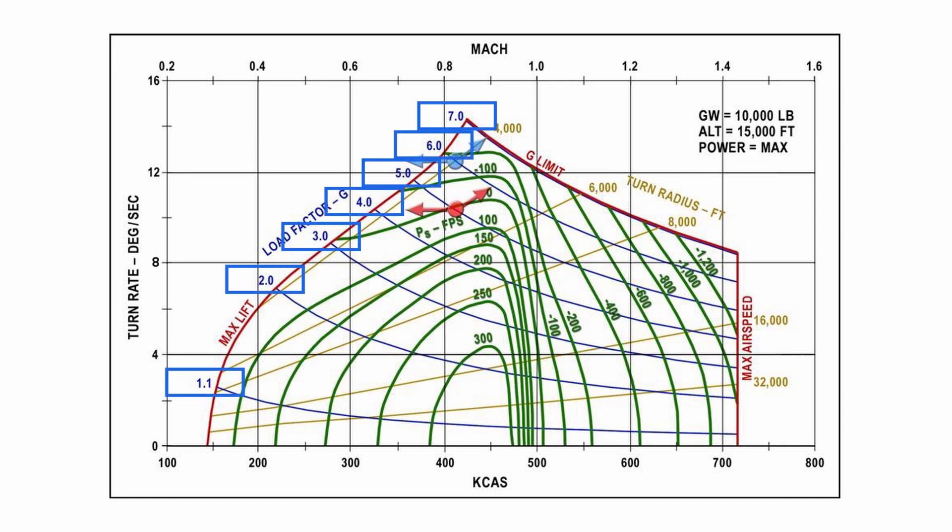These blue lines represent how much g-load needs to be pulled to reach that part of the chart. In other words, if you're flying at 300 knots calibrated and want to turn at 8 degrees per second, then you would need to pull back on the stick enough for 3 g's, since that point is sitting right by the 3 g line.